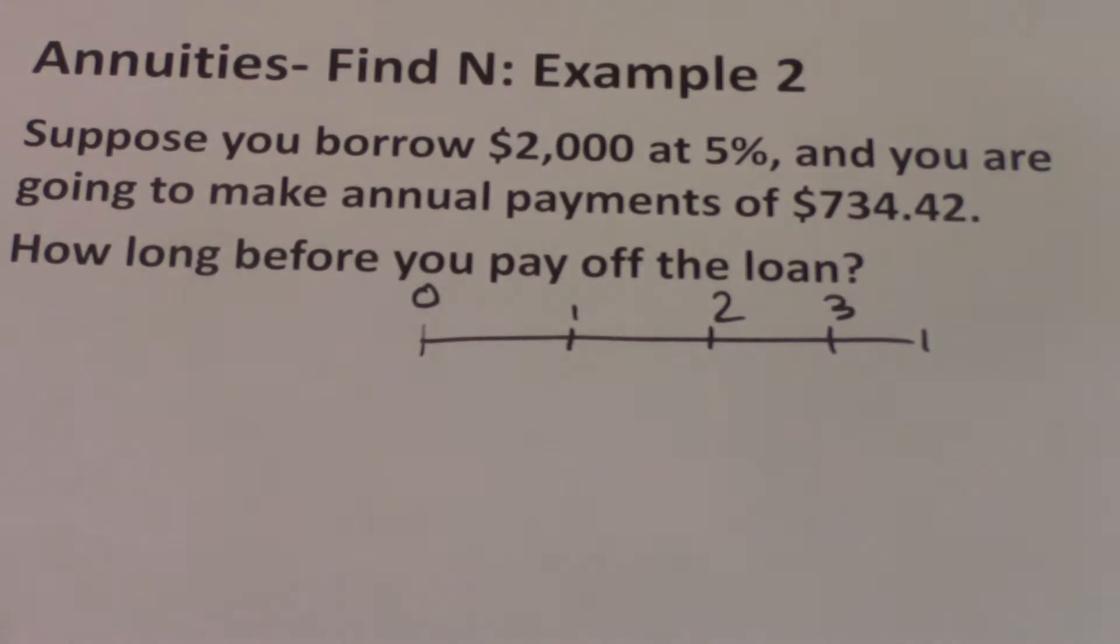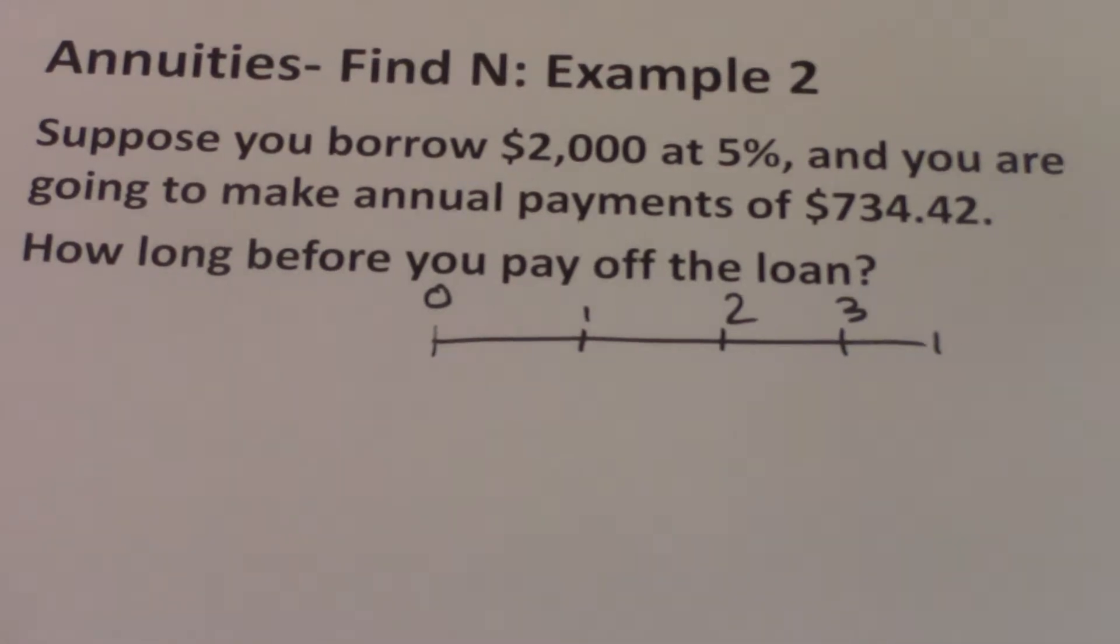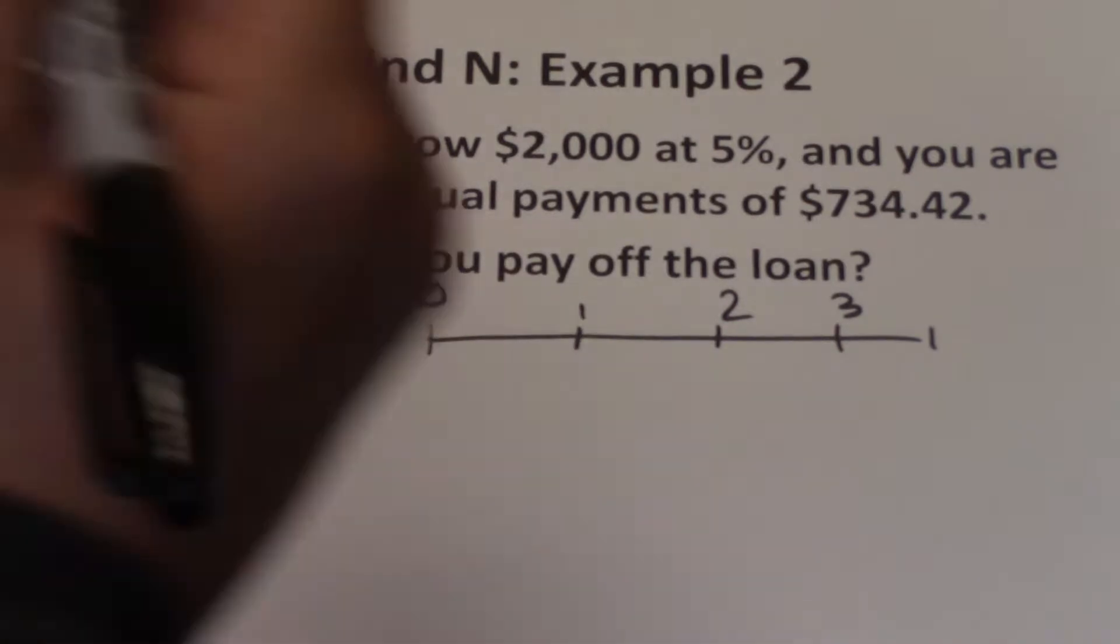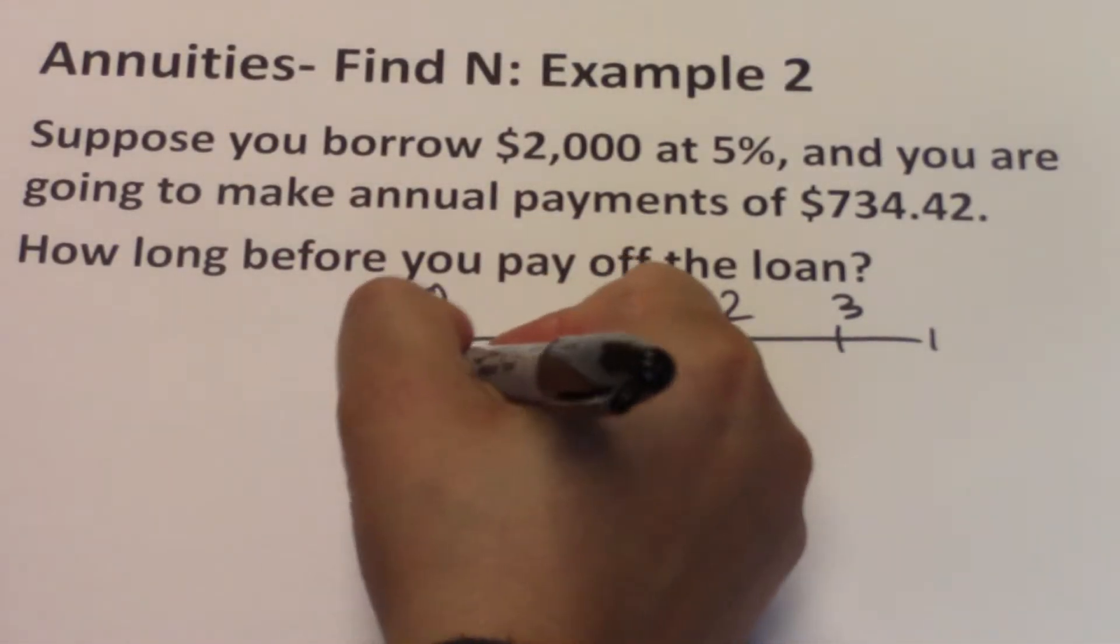The $2,000 that we are getting, so you borrow $2,000 at 5%, that $2,000 is a cash inflow to you and it happens today. So it happens early on the timeline, so it would be $2,000.